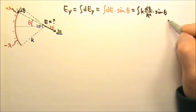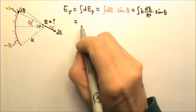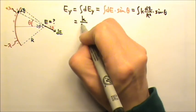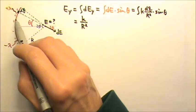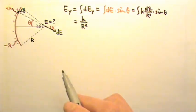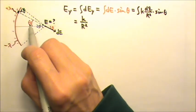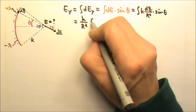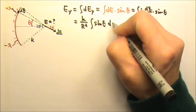And then anything that's a constant can be taken out of the integral. So what can we take out? We can take out the k and the r squared, because for every dQ, the r is the same. But it's not θ, because a different dQ would have a different θ. So what's left in the integral is the sin θ dQ.